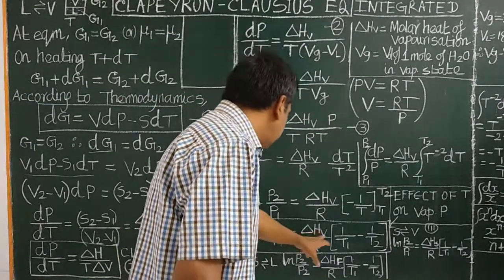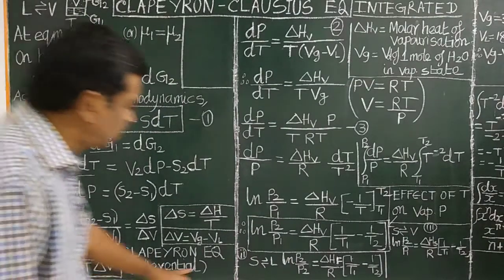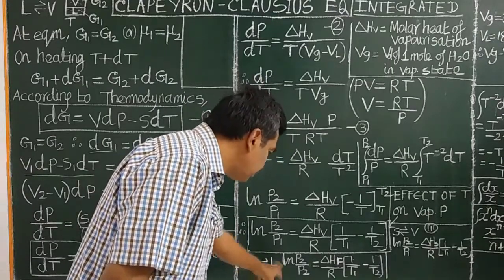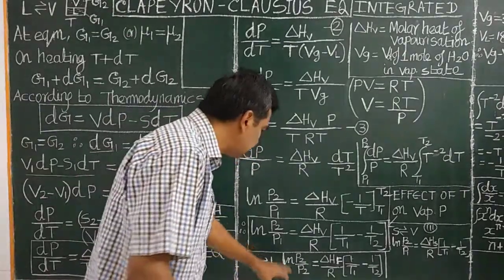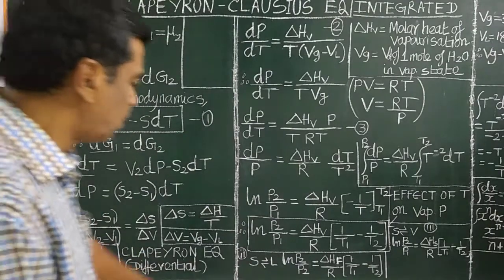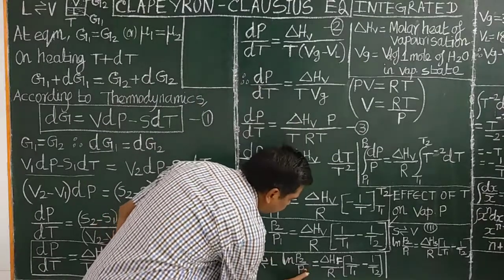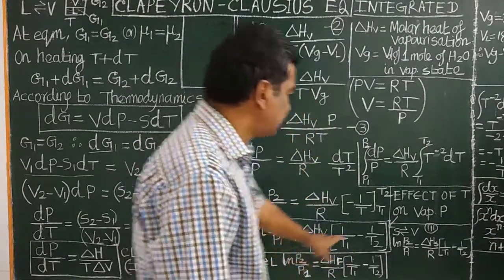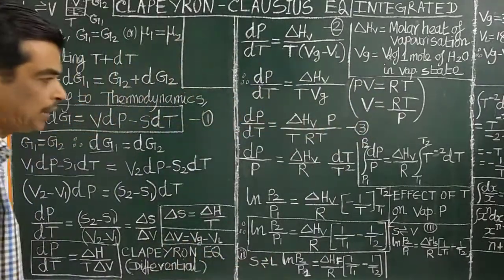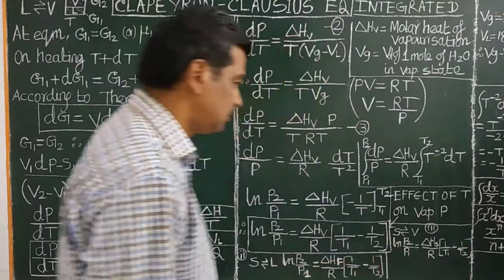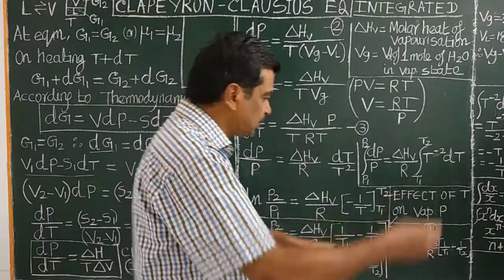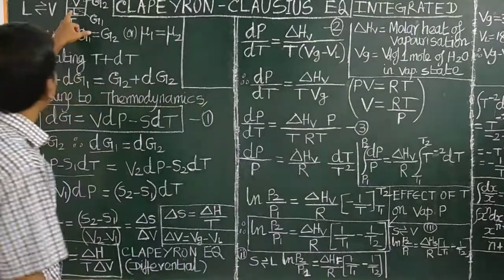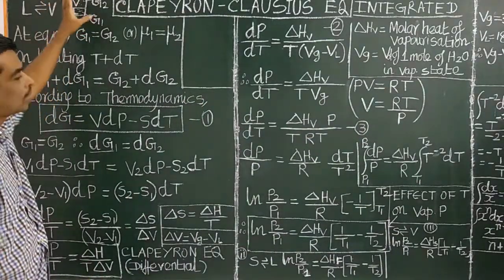Similarly, this equation can be applied to the fusion curve, where solid is in equilibrium with liquid. It is also applied along the sublimation curve, where solid is in equilibrium with vapor — for example, iodine subliming to vapor form — and ΔHsub is the heat of sublimation. This equation gives the effect of temperature on vapor pressure. At temperature T1, we have vapor pressure P1, and at T2 we have P2. For example, given vapor pressure at 25°C, calculate the vapor pressure at 100°C.